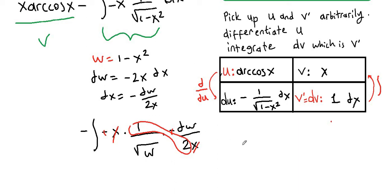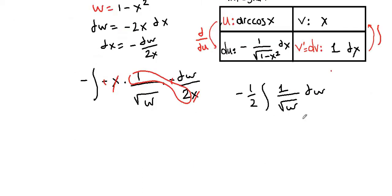So for this integral, we obtain negative one half integral of one over square root of w dw. Now we know how to integrate this.